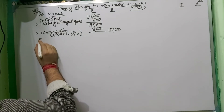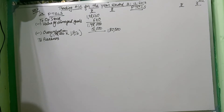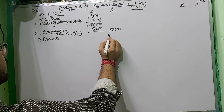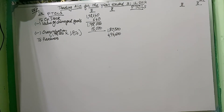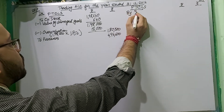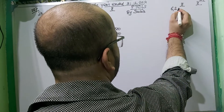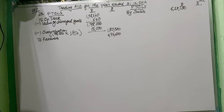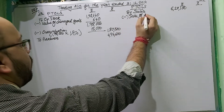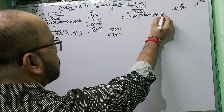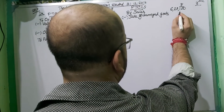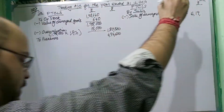Purchases for 2014 are ₹4,96,600. Sales for the year are ₹6,20,100. From sales, we deduct the sale of damaged goods of ₹500, giving net sales of ₹6,19,600.